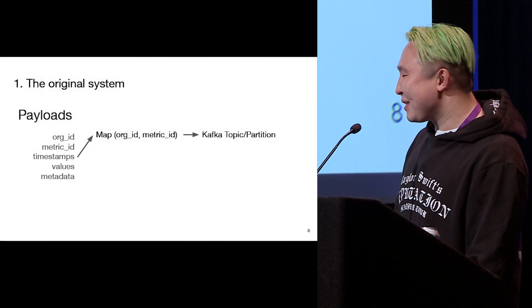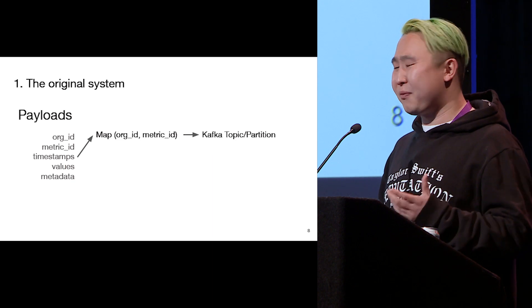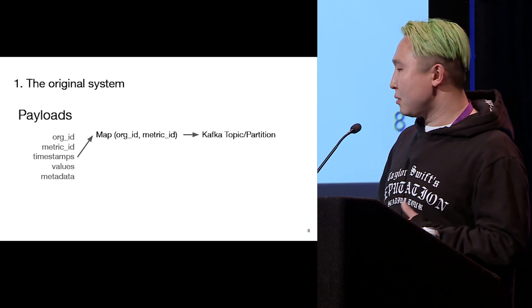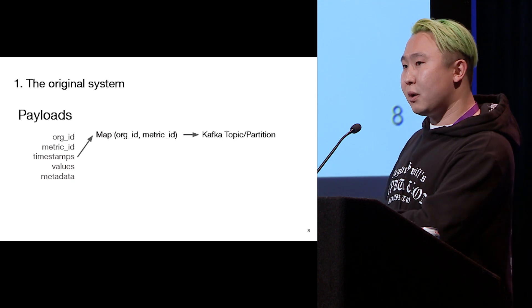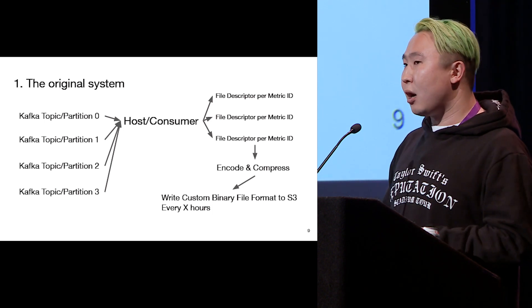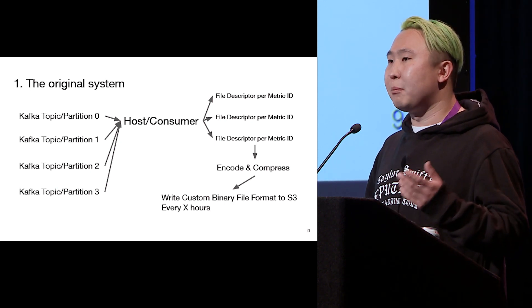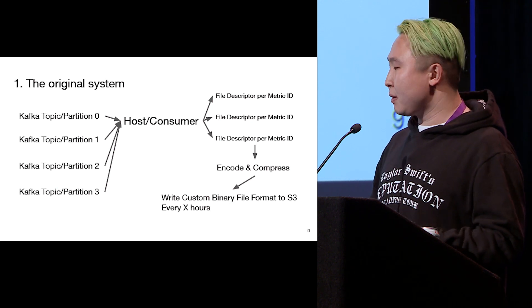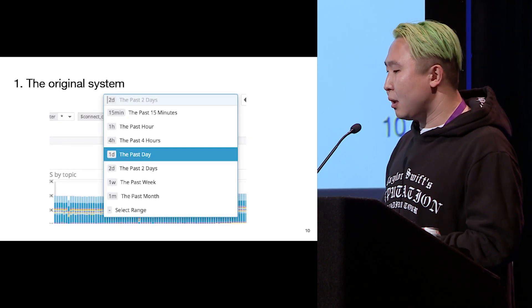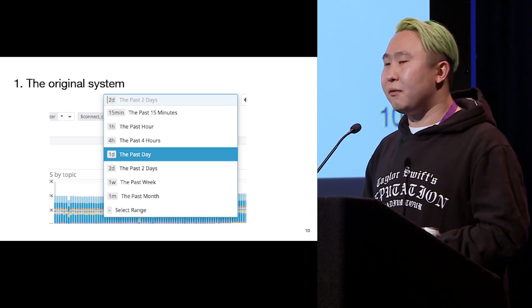This is a description of the data that we have. We capture org IDs, metric IDs, some timestamps, values. And this goes through a certain map that distributes the payloads to Kafka topics and partitions. So a certain metric will always go to a certain topic and partition. From there, different topics and partitions are consumed by a host or a single consumer. Then this consumer writes data to different files — one file per metric ID. After that, it encodes, compresses, and writes custom binary files to S3 every X hours. This whole system powers historical metrics at Datadog.